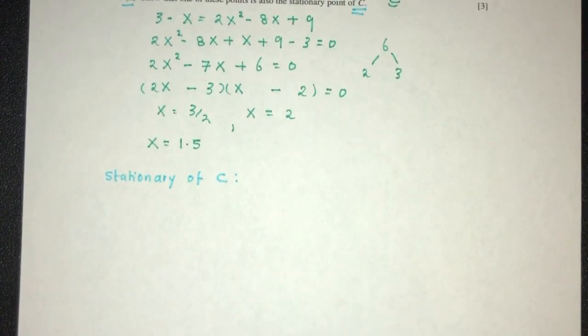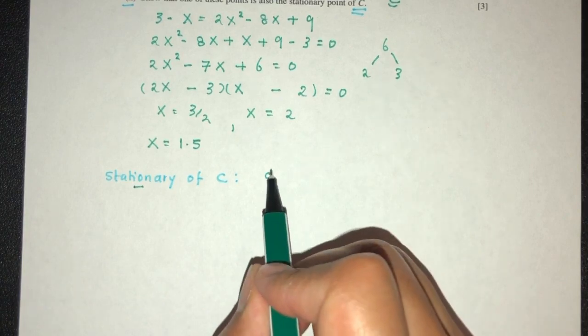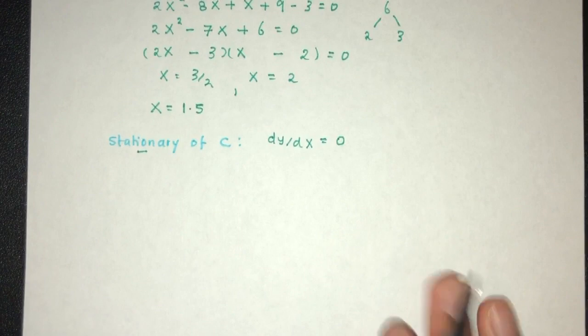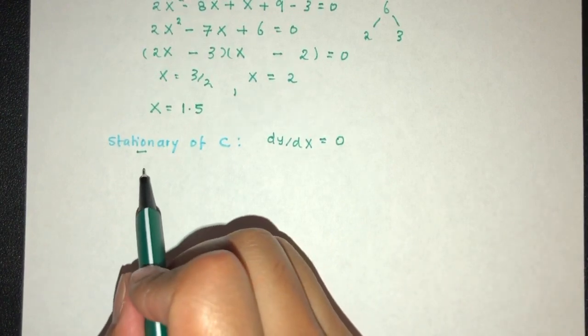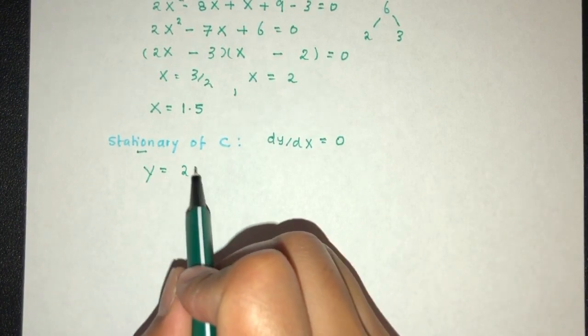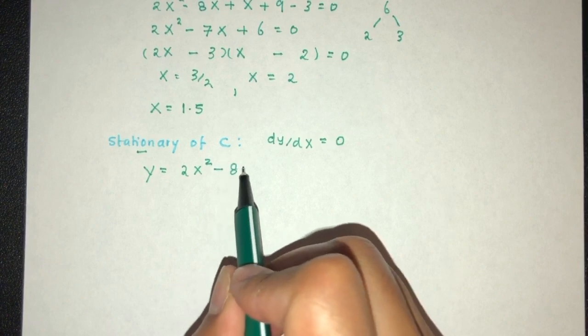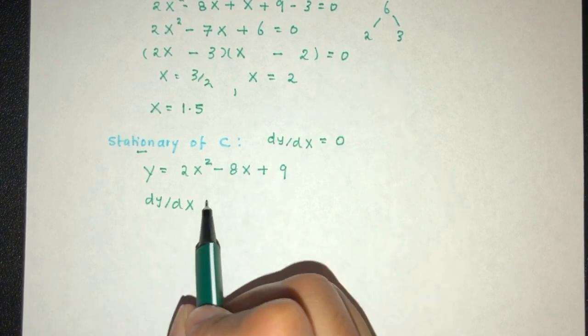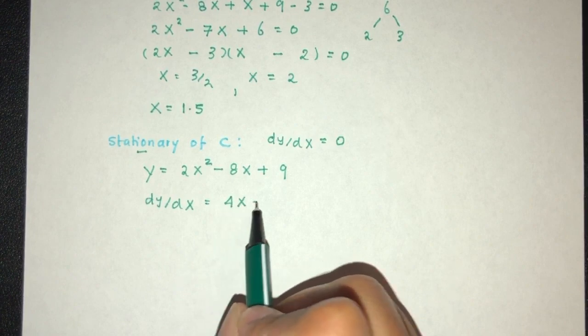So how can we find this? We know that at the stationary point of C, the value of dy by dx have to be 0. Let's first find dy by dx. So y of the curve is 2x squared minus 8x plus 9. So dy by dx will be 4x minus 8.